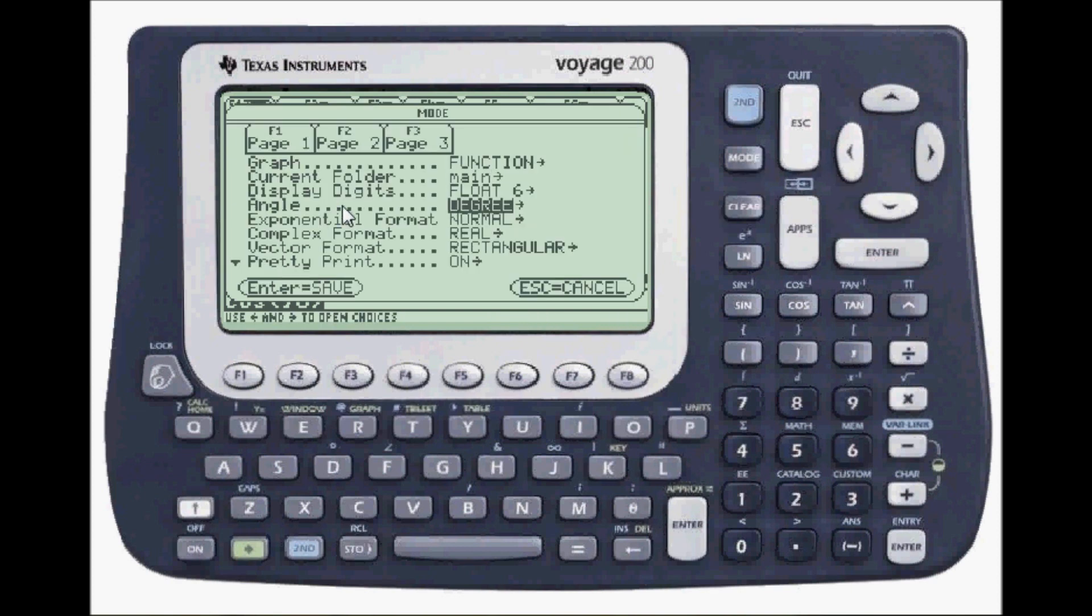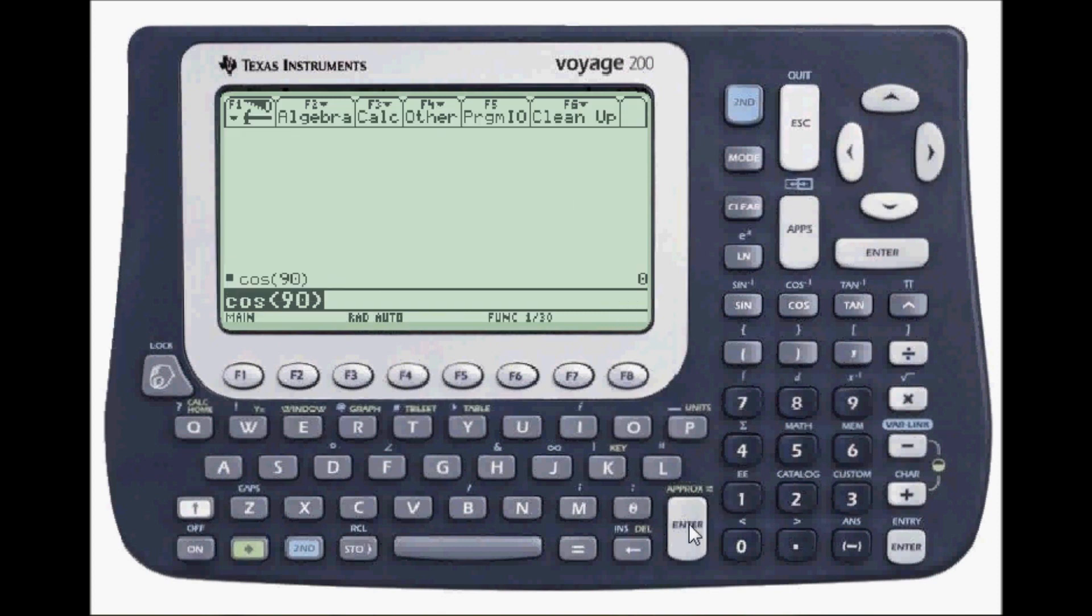To change over to radians, go to mode and angle. Here I can change to radians. Press enter. A problem such as sine of pi over six would require radians. Press enter. You get one half.